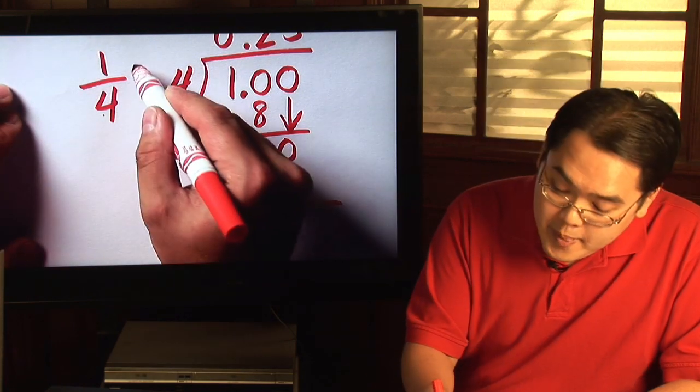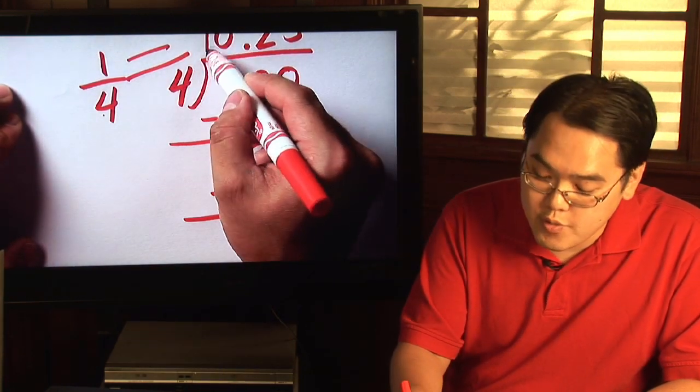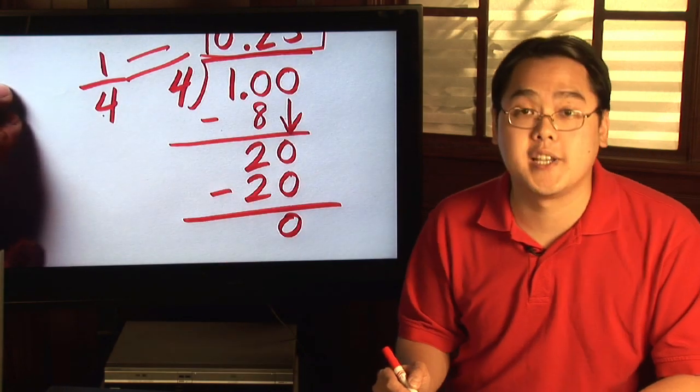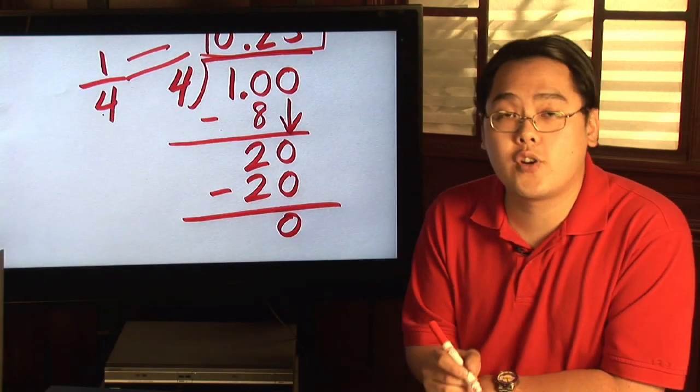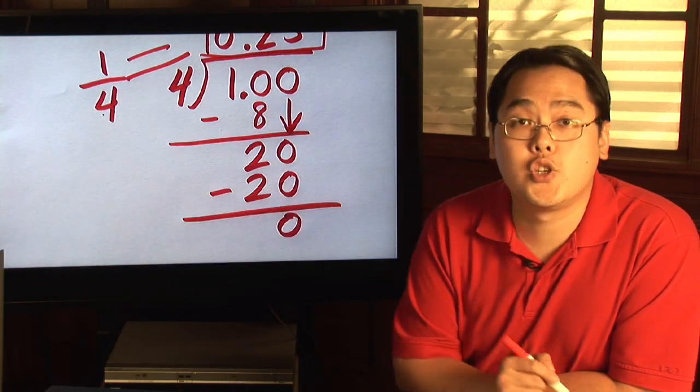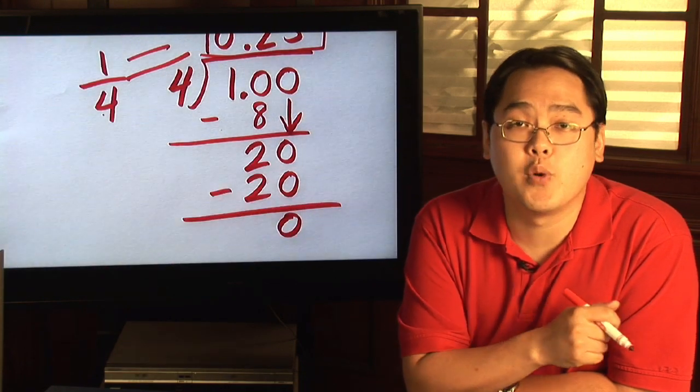So, in this case, one fourth is equal to zero point two five as the decimal. If you know how to convert a ratio into a long division problem, the answer will give you the decimal.